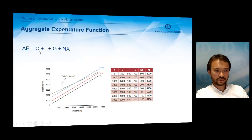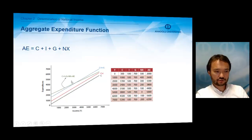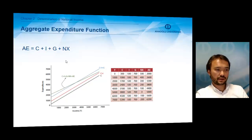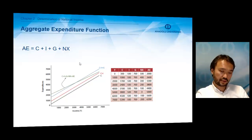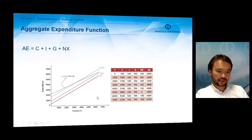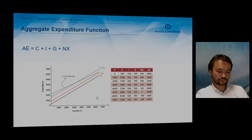When we sum each of the expenditures — consumption, investment, government, and net exports — we get the aggregate expenditure function, which shows all determinants together. When there is an increase in one of the components of aggregate expenditure, the AE function shifts upward; when there is a decrease in one of the components, the AE function shifts downward.